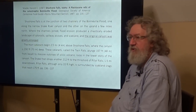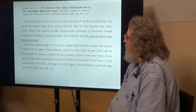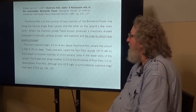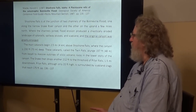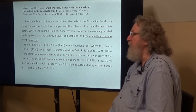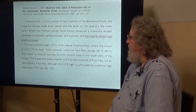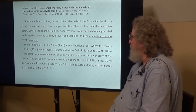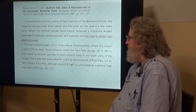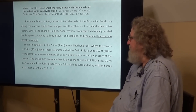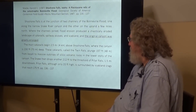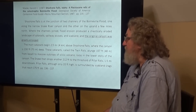Shoshone Falls is at the junction of two channels of the Bonneville Flood — one along the narrow Snake River Canyon and the other on the upland a few miles north. Where the channels joined, flood erosion produced a chaotically eroded landscape of cataracts, spillway alcoves, and scab lands, and the original canyon was greatly enlarged. The main cataracts began 2.5 miles above Shoshone Falls, where the canyon is 230 feet deep. These cataracts, called the Twin Falls, plunge 157 feet from basalt to massive outcrops of silicic volcanic rocks in the lower story of the canyon. The Snake then drops another 212 feet to the threshold of Pillar Falls, 1.5 miles downstream. Pillar Falls, although only 20 feet high, is surrounded by scab land crags that reach 175 feet.